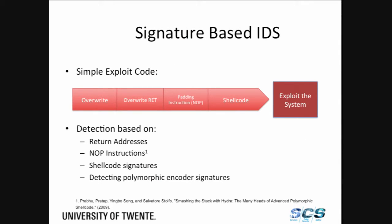At the same time, security experts tried to detect this kind of attacks by introducing signature-based intrusion detection systems. The way they were doing that was by looking at how exploits work — which usually included a return address, a bunch of junk data, multiple NOP instructions (x90), and of course the shellcode signature itself. Even if you were using public polymorphic encoders, signature-based intrusion detection systems could detect that too.